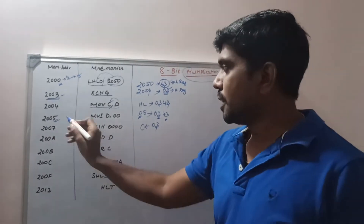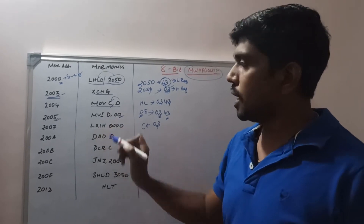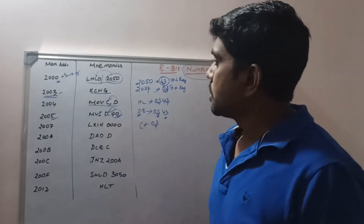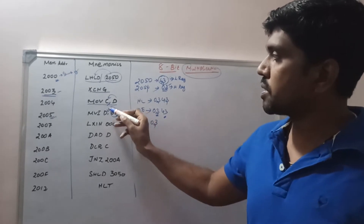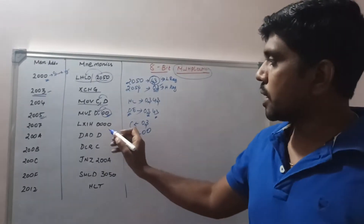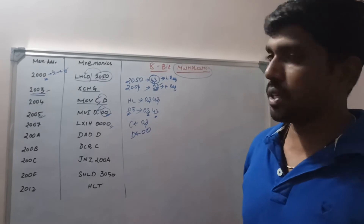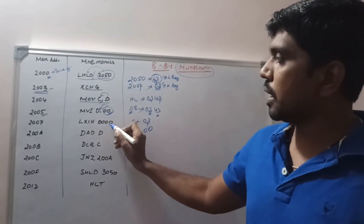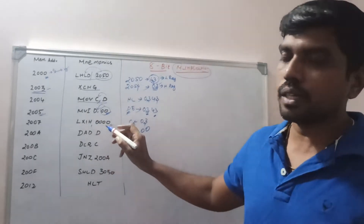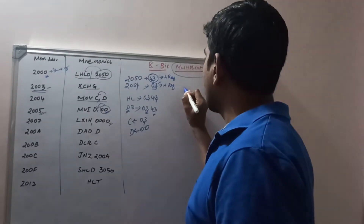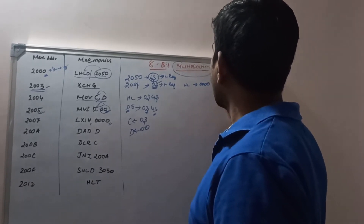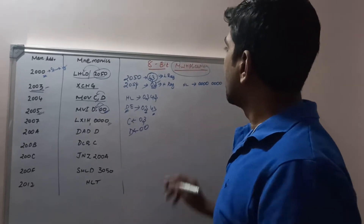At location 2005H, you write MVI D, 00H, so the D register value is cleared to 00. Next, at 2008H you write LXI H, 0000H to clear the HL pair register. Before execution, whatever value was present in the HL pair register is cleared, and now the HL pair value is 0000H. Since LXI is a 3-byte instruction, it occupies 3 memory locations bringing the program counter to 2008H.